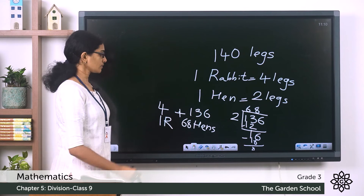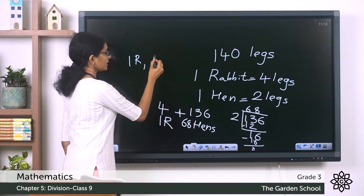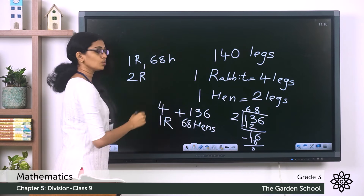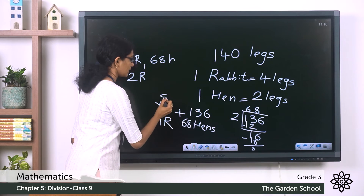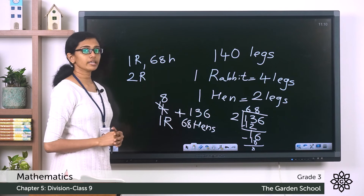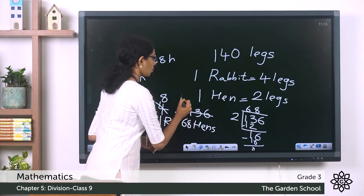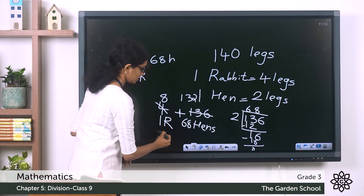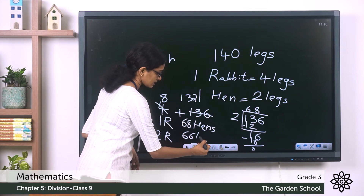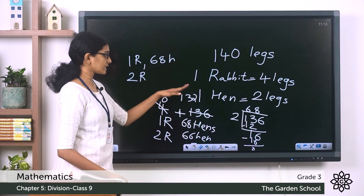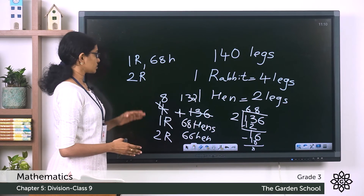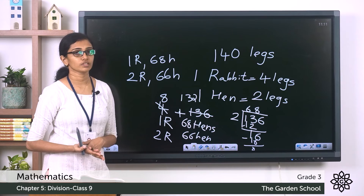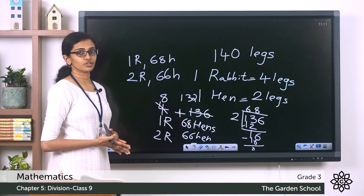So if there is 1 rabbit, there would be 68 hens. What if there are 2 rabbits? Two rabbits have 8 rabbit legs, so 132 hen legs remain, giving 66 hens — that is 132 divided by 2. Similarly, we can find different combinations and there are different solutions for this question. Try to find out more solutions on your own.